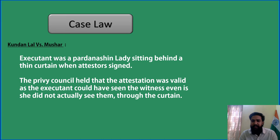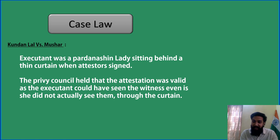If you see the previous section on essential conditions of a valid attestation, in every point it is essential that the executant should see the witness. She was coming to that point saying that because of her thin purdah she could not see the witness. But the court said otherwise — if she wanted, she could have seen. The Privy Council held that the attestation was valid, and the executant could have seen the witness, even though she did not actually see them through the thin curtain.